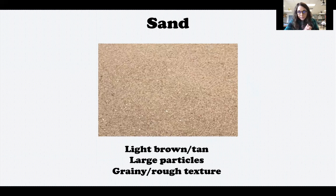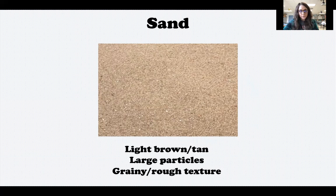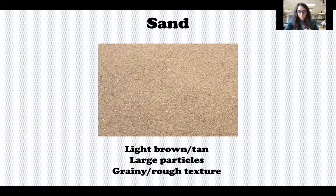The next one is sand. Sand is a light brownish-tan color and has large particles. I know you might be thinking sand is not large, but when we're talking about soil particles compared to the other types of soil, sand particles are large, especially compared to silt and clay. It has a kind of grainy, rough texture. Sand is also not great at growing most plants because since the particles are so large and spread out from each other, it tends to not hold in enough water. There are plants that have adapted to live in sand, such as desert plants.